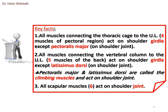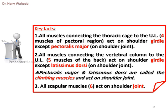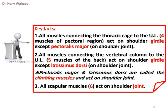Key facts. All muscles connecting the thoracic cage to the upper limb — four muscles of the pectoral region — act on the shoulder girdle, except pectoralis major which acts on the shoulder joint. All muscles connecting the vertebral column to the upper limb — five muscles of the back — act on the shoulder girdle, except latissimus dorsi which acts on the shoulder joint. Pectoralis major and latissimus dorsi are called the climbing muscles and act on the shoulder joint.